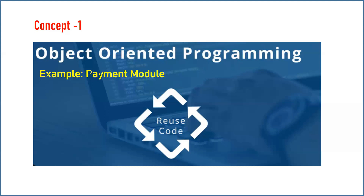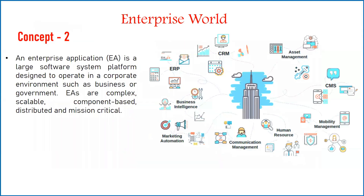For example, we have a payment module in enterprise applications. If payment needs to be executed at multiple places, you can have a separate payment module which you call inside your application at multiple places. This is the simple concept of object-oriented programming — in a nutshell, the important concept here is the re-usability of code.